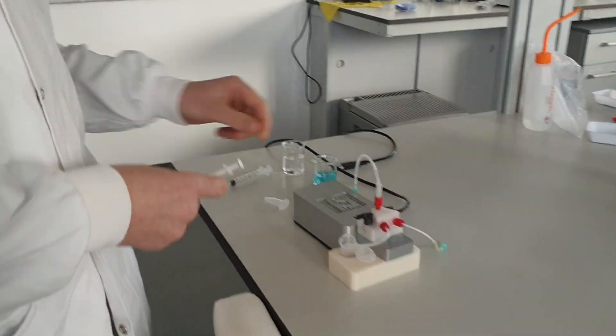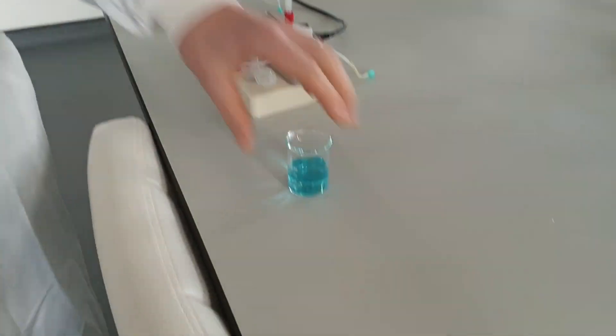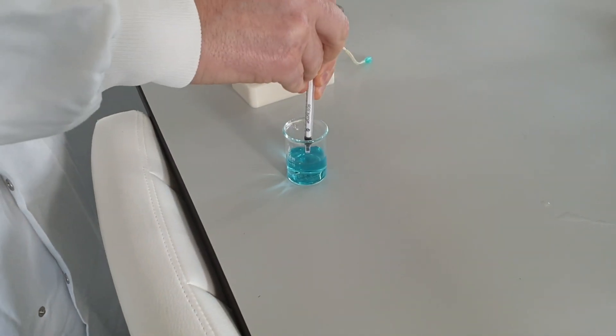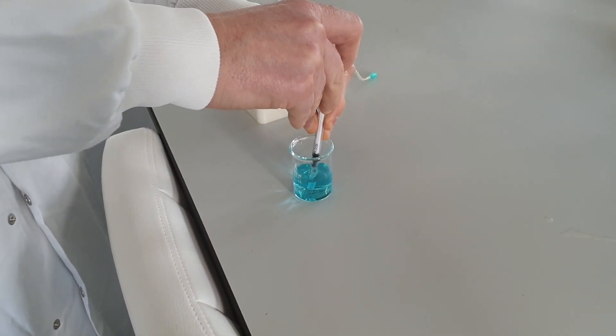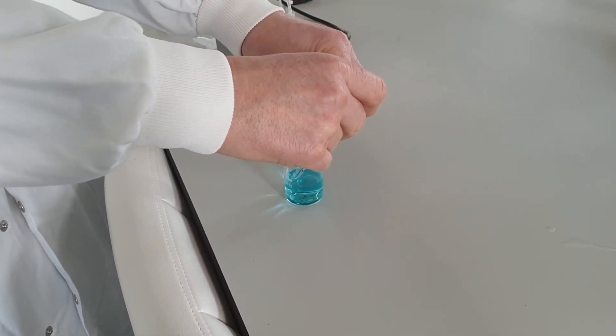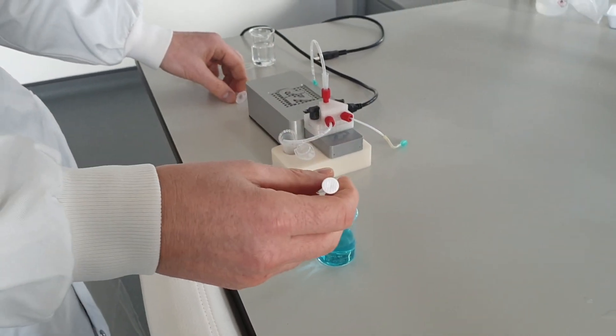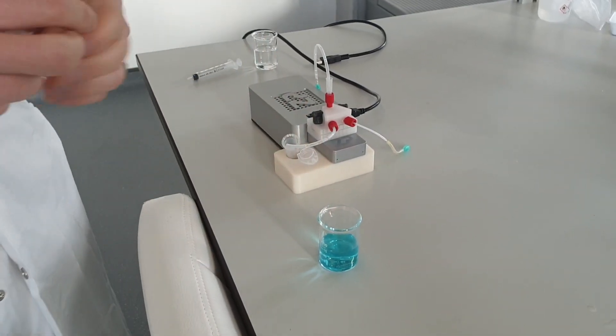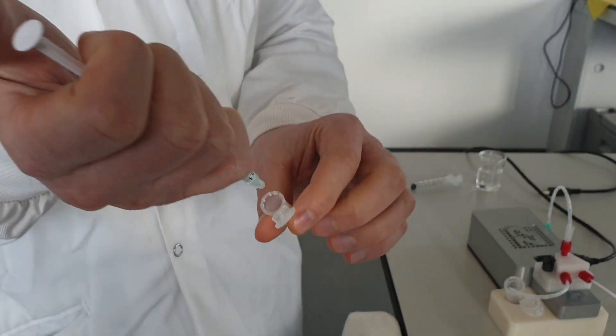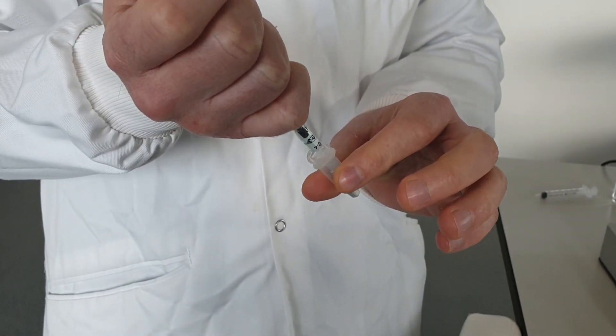The first thing we're going to do is imagine somebody has a sample. I'm going to take out about 500 microliters of the sample. We imagine that somebody's adding a reagent to that sample.